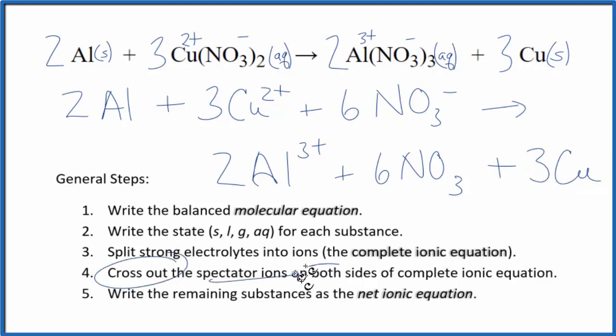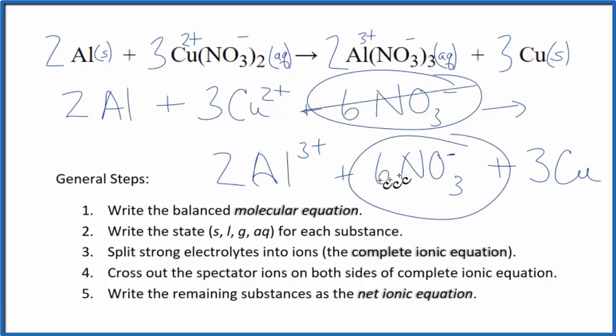Now we can cross out these spectator ions. They're on both sides of our complete ionic equation. The only thing I see that's the same is here in the reactants, we have 6 nitrates, and here in the products, we have 6 nitrate ions. Get rid of those. What's left? That's the net ionic equation for aluminum plus copper 2 nitrate. I'll clean this up and write the states in, and we'll have our net ionic equation.